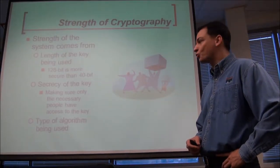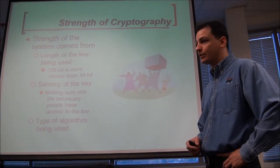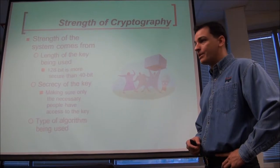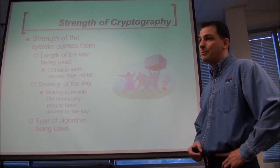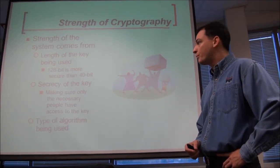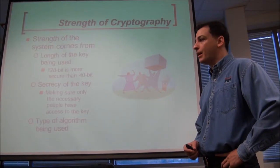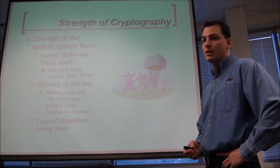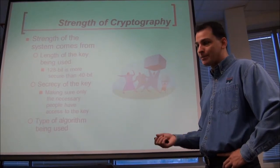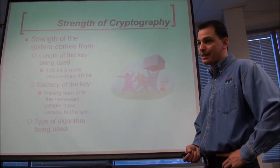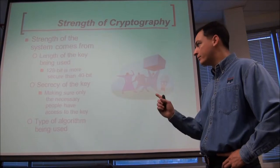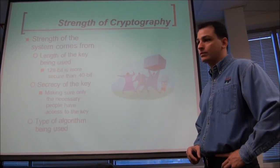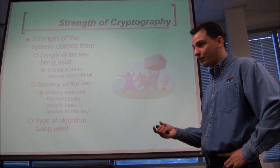Let's talk about strength. To find out how strong something is or how many combinations there are, it's 2 to the power of the bit size. So 2 to the power of 128 versus 2 to the power of 40 — that's a common mathematical function. Not that we have to do any aggressive math, but it just helps to get the idea.